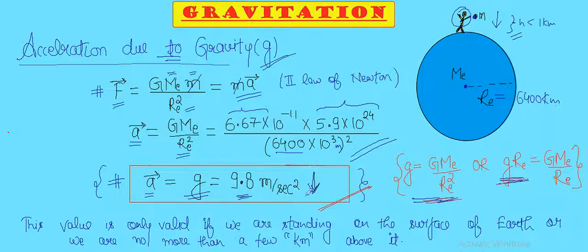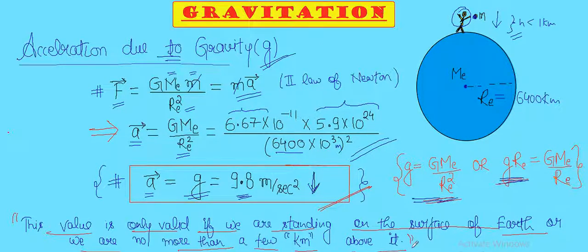For now you need to know that the acceleration due to gravity 9.8 meter per second square comes from this formula. Moreover, you need to know that this value is only valid if we are either standing on the surface of the earth or we are no more than a few kilometers above it. So what happens if we go a few kilometers above the surface of the earth? In that case the acceleration due to gravity will change. I'll explain that in my next video. Thank you for watching, please like and subscribe.